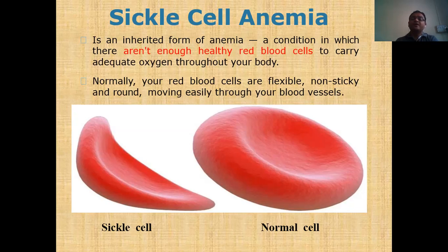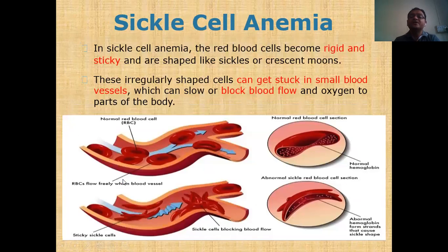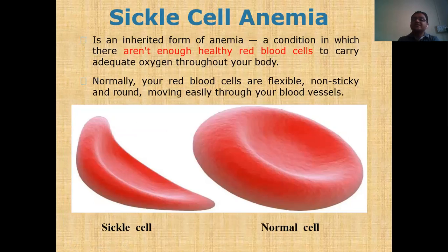The normal RBC has a D-shaped structure, which is flexible, non-sticky, and rounded — it can easily move through blood vessels. Whereas the sickle cell has a half-moon shape structure that is not flexible but rigid and sticky. These properties are totally opposite to normal cells. Non-flexible, rigid, and sticky — these are the properties observed in the sickle cell.